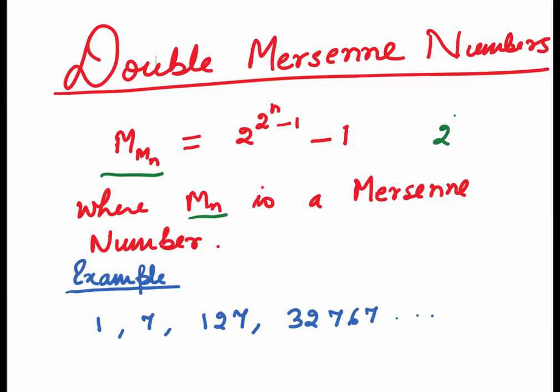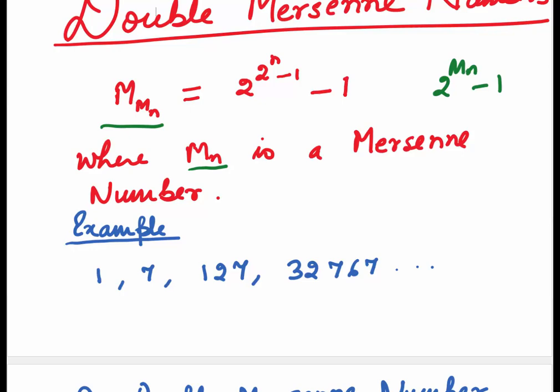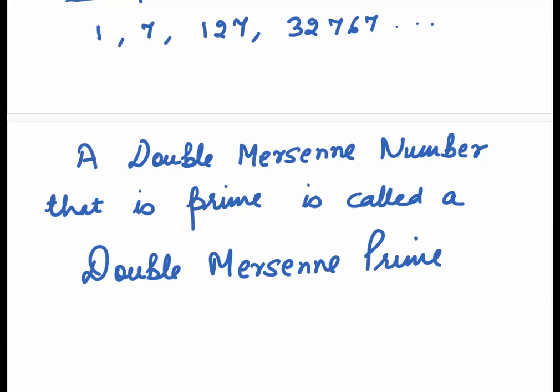Some of the examples are 1, 7, 127, 32767. A double Mersenne number that is prime is called a double Mersenne prime.